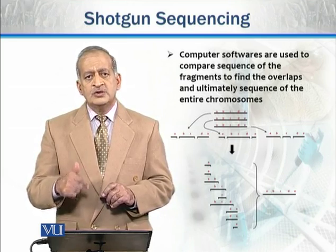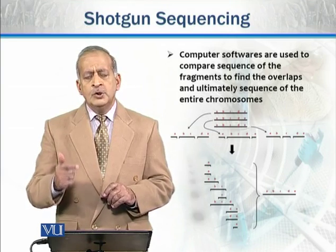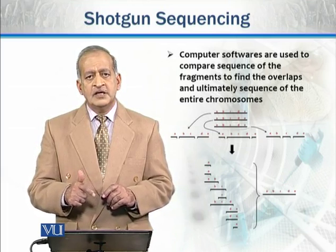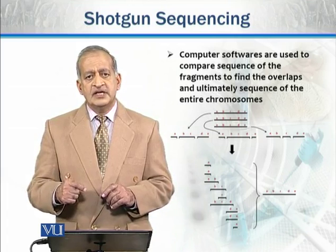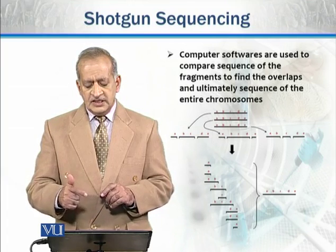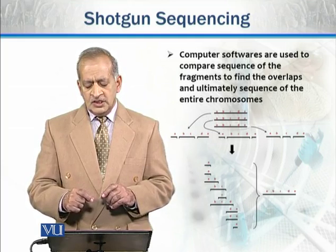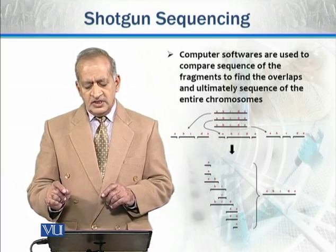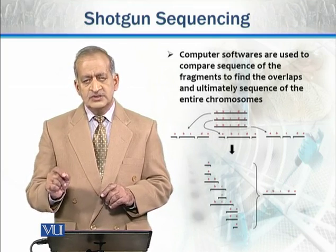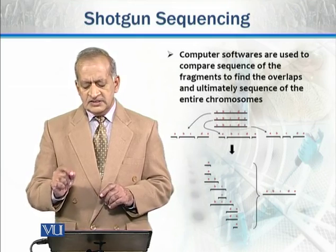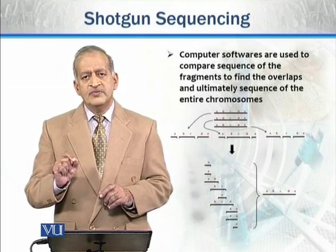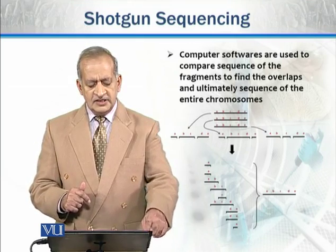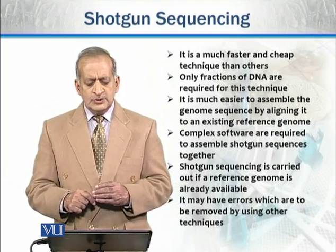We can then align these fragments using their overlapping regions. By aligning the fragments together, we reconstruct the overall sequence — a, b, c, d — and this is the complete shotgun sequencing method.